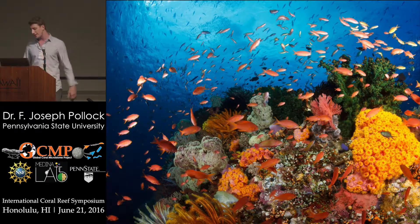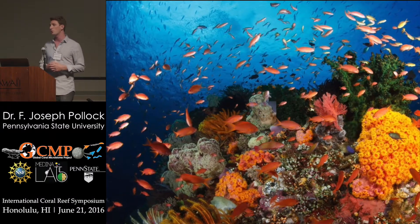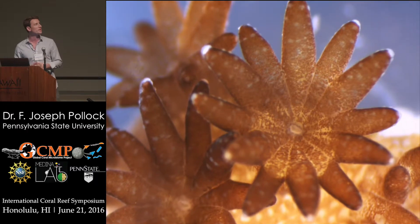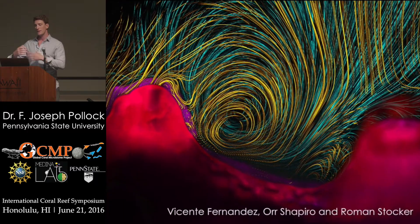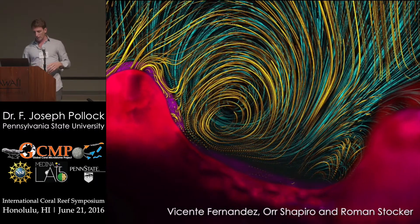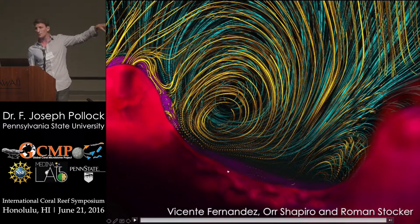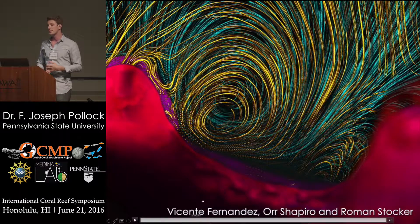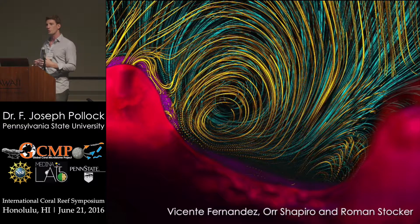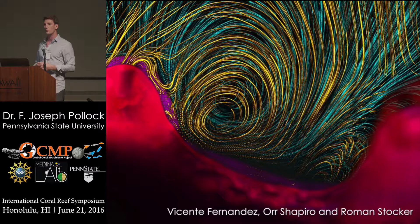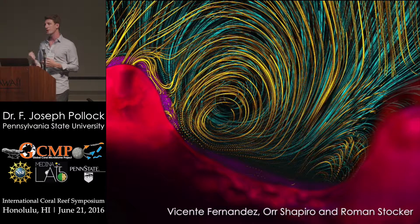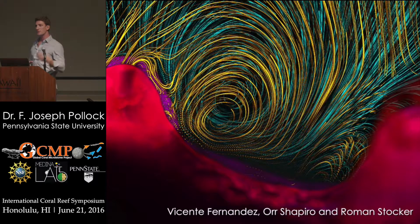If we take those ideas and zoom in 10,000 times to the scale of an individual coral polyp, we see a very similar situation where we've got a coral mucus layer that potentially hosts its own community, the coral tissue, as well as the coral skeleton. It would make sense that these different zones host different communities of microbes. But traditionally, the techniques used to study coral microbiomes have compressed all of these different zones and all of the microbial diversity they host into a single extraction or a single sample. Without knowing where these microbes are living, it's very hard to understand what their ecology or function is.